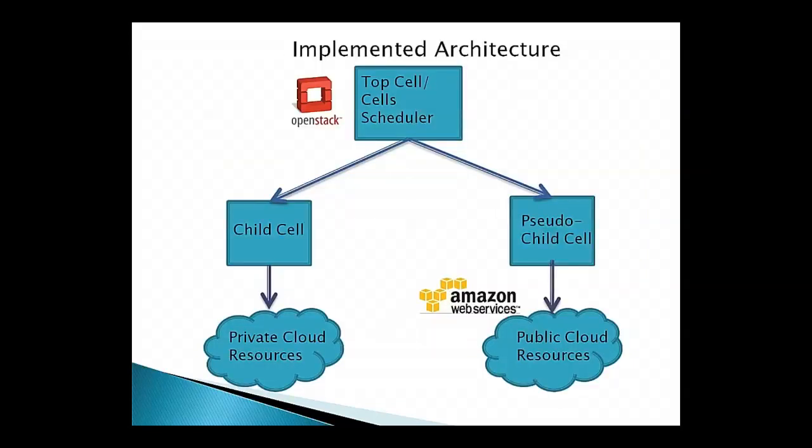This is the way we have implemented it. We have leveraged the cells architecture. In the cells architecture, there are a number of cells. OpenStack doesn't define what a cell is — it's a collection of hardware; it could be a data center or a rack. Cells can be set up whichever way you want, and they can also be hierarchical. At the top level, there's a top cell which has the cell scheduler, and that decides in which cell the request will actually be executed. Below that, there are child cells.